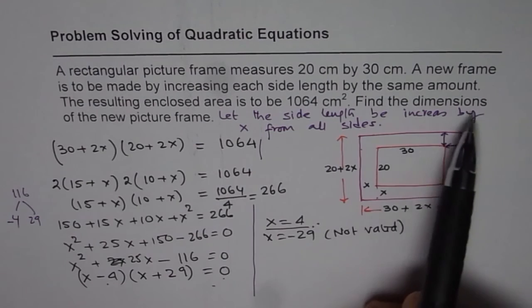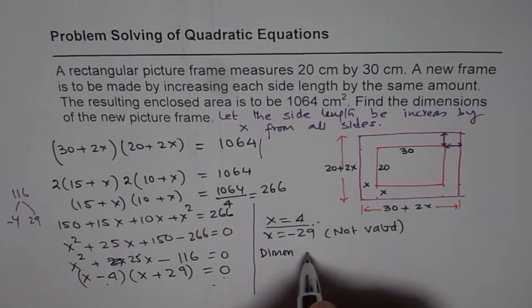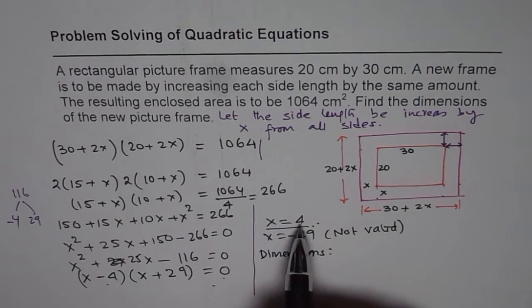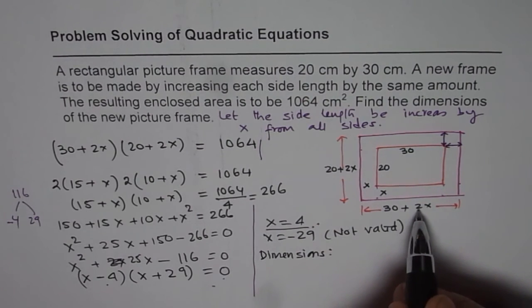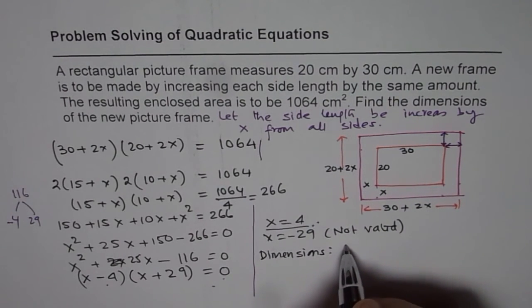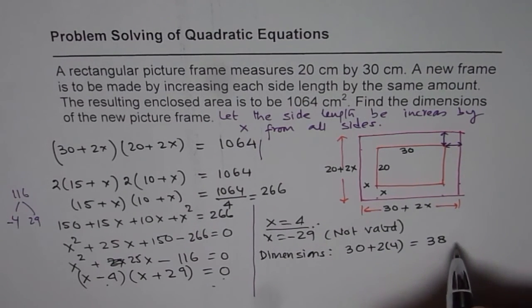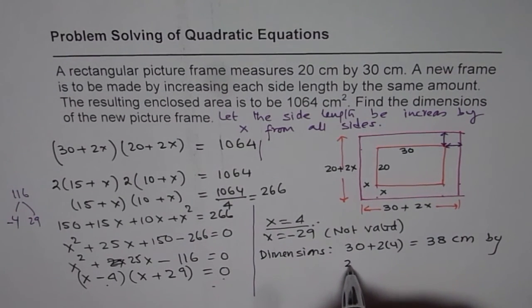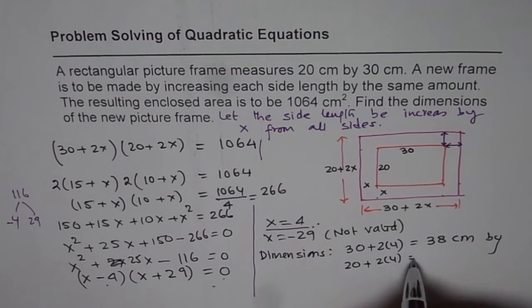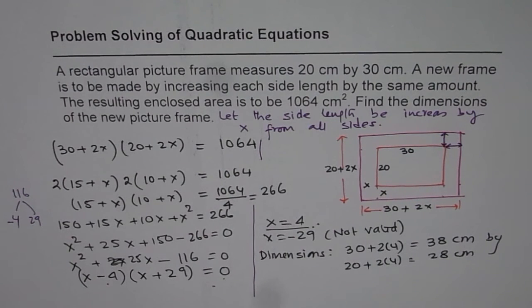So the question is, find the dimensions of new picture frame. So the dimensions will be, you have to add 4 to each side. So 20 plus 2 times 4 and 30 plus 2 times 4. So the dimensions are 30 plus 2 times 4, which is 8, which is 38. And the units are centimeters by, so that becomes the length. And the width will be 20 plus 2 times 4, which will give us 28 centimeters. So that becomes the dimensions for the picture frame.